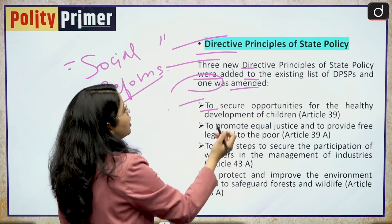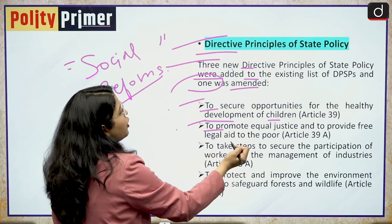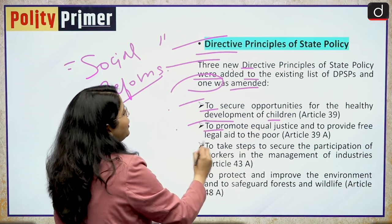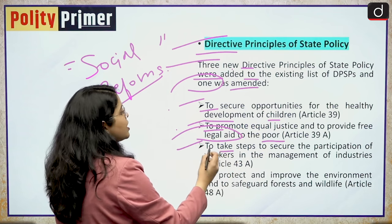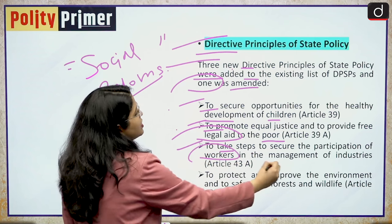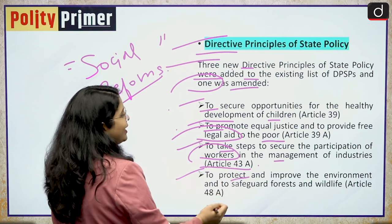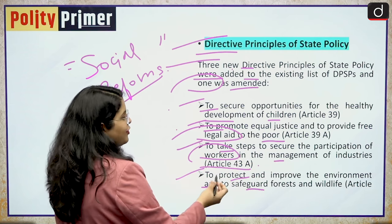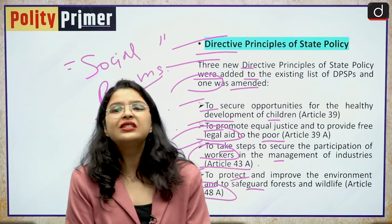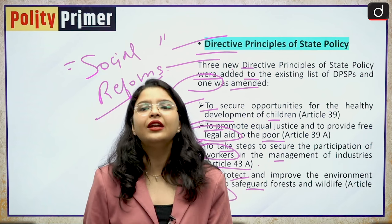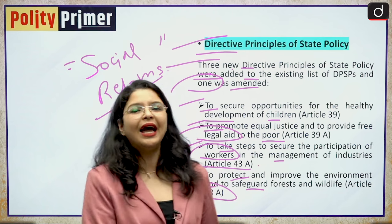The first new DPSP is to secure opportunities for healthy development of children — Article 39. Second, to promote equal justice and to provide free legal aid to the poor — Article 39 clause A. Third, to take steps to secure the participation of workers in the management of industries — Article 43 clause A. And fourth, to protect and improve the environment and to safeguard forests and wildlife — Article 48 clause A. All of these directive principles were added in the Indian constitution for the very first time by the 42nd Constitutional Amendment Act.